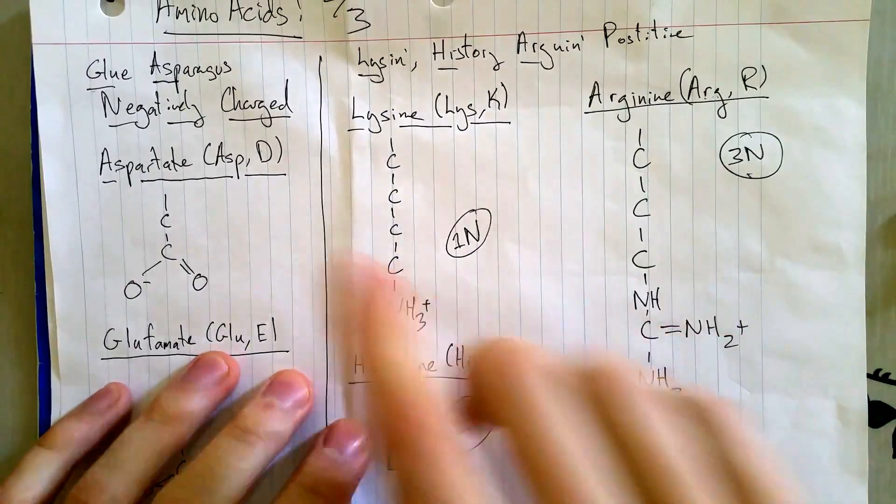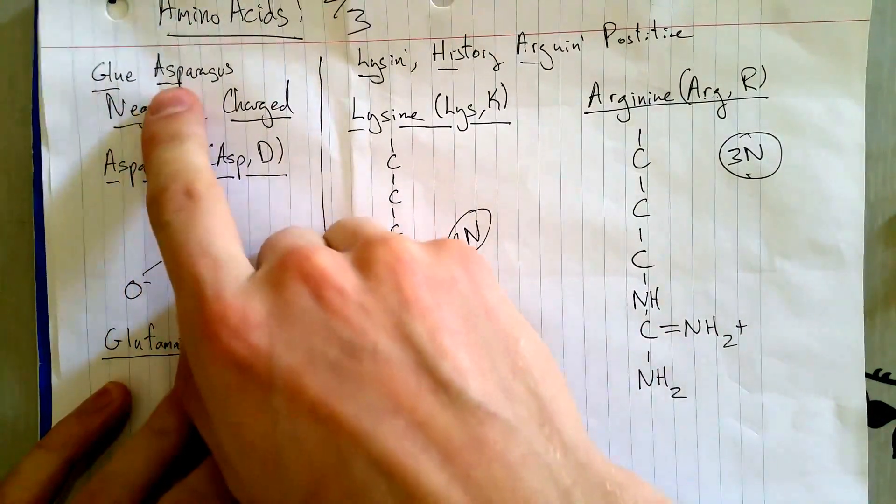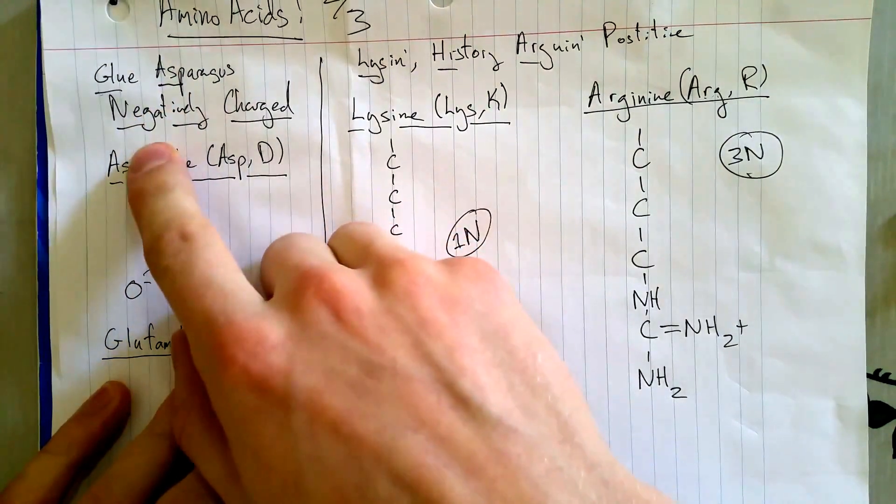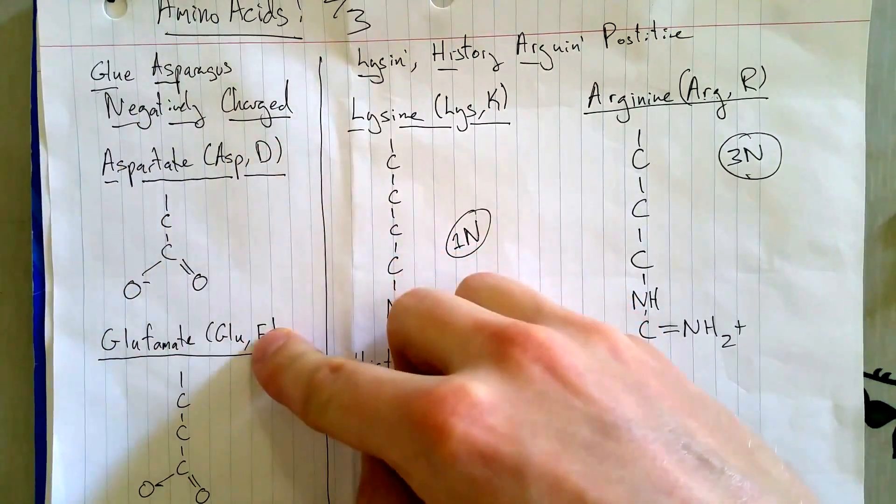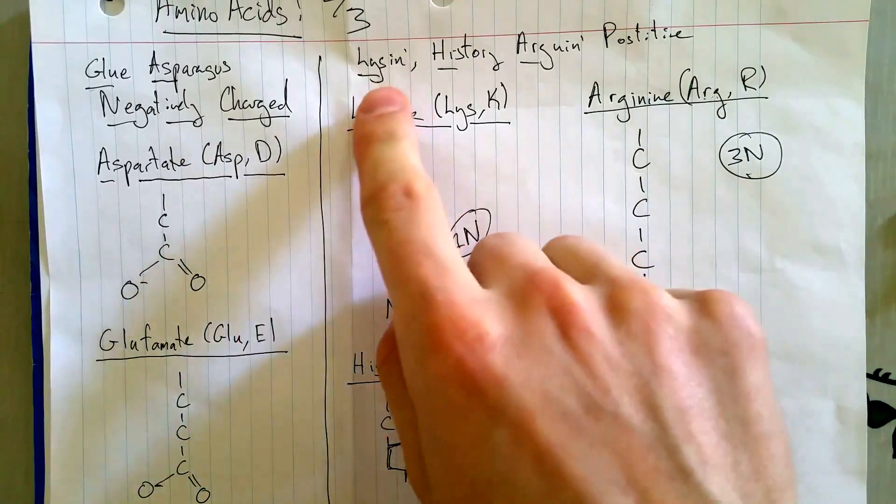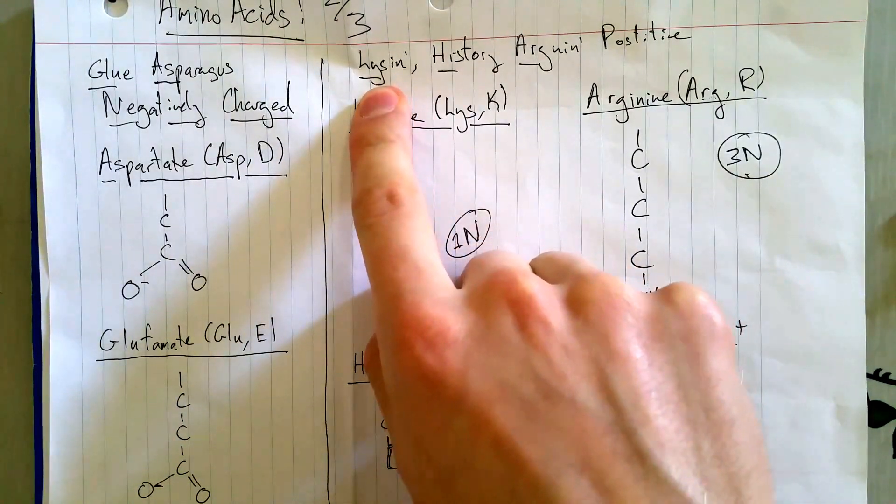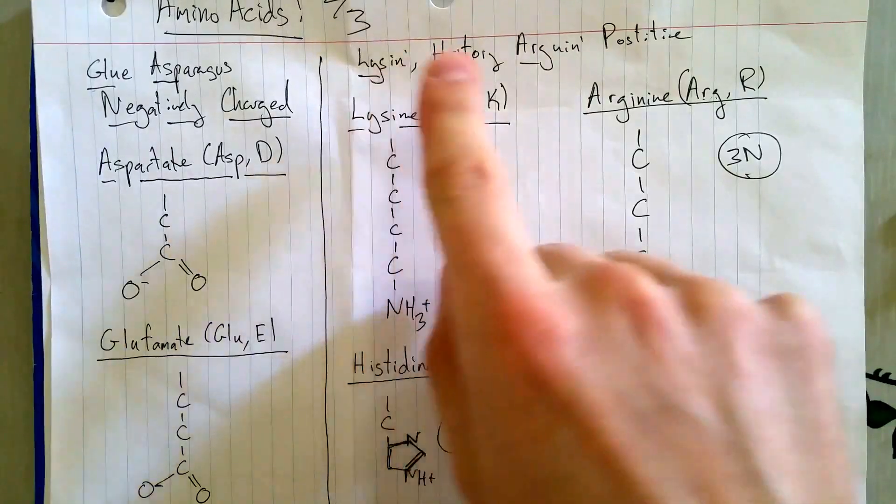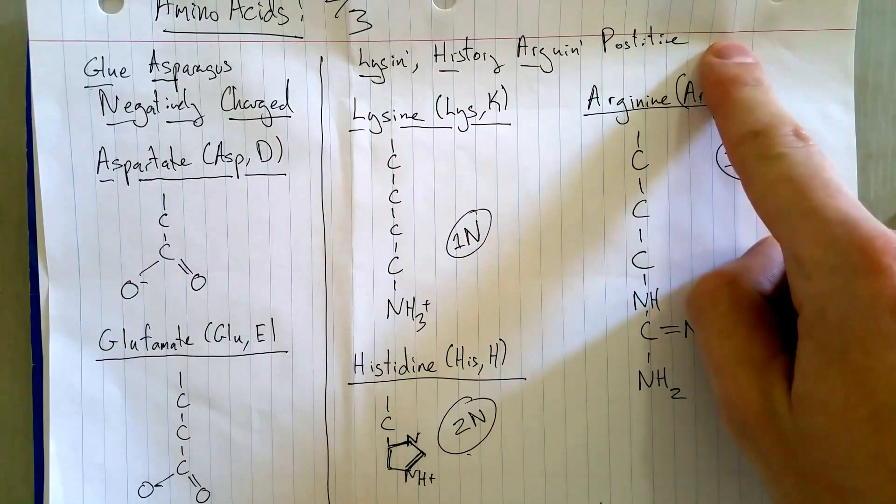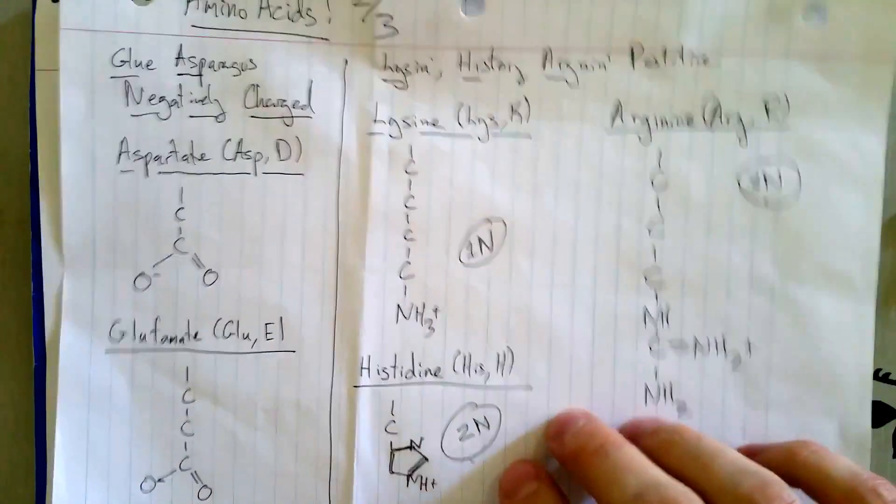Then the story continued, they got glue on their asparagus, which was a negative experience for them, two negatively charged amino acids. They got an argument, Lou said to Val, listen, I have a history of arguing when I'm positive I'm right. Those are the positive amino acids.